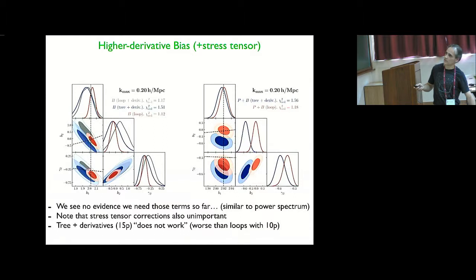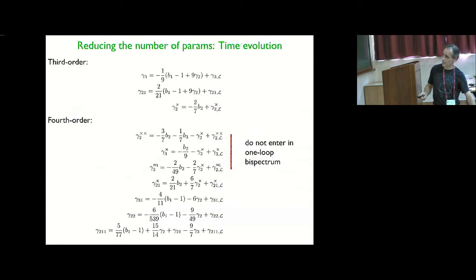And just to summarize here, you can see that that's not correct. So if I choose to do tree level without loops and higher derivatives, the fits are significantly worse than if I just have loop corrections. And adding derivatives has 15 parameters, but it's worse than the loops, which have 10 parameters. So we actually don't see that that's a better model.